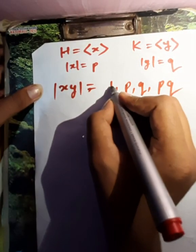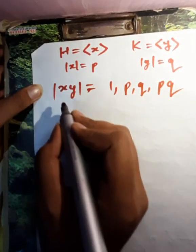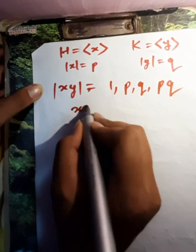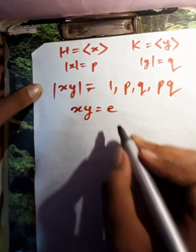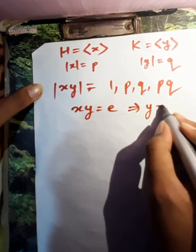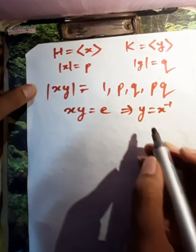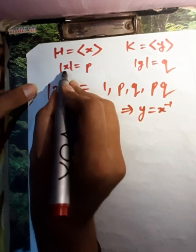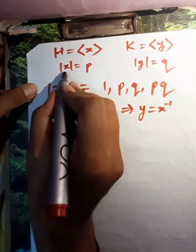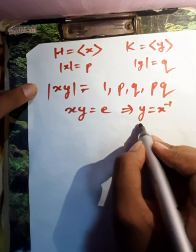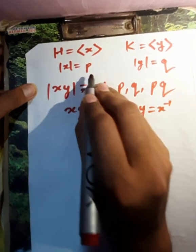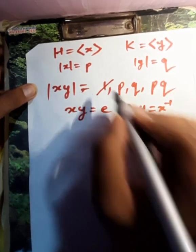It cannot be 1 because if it were 1, we get xy equal to identity, which implies y equals x inverse. But order of x is p, which implies order of x inverse is p, but order of y is q, and q is not same as p. So this case is not possible.